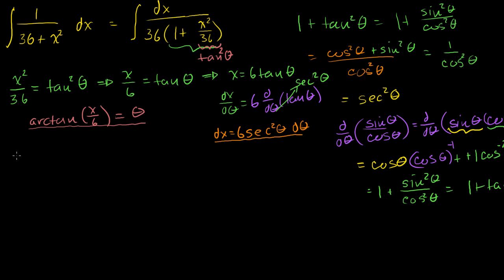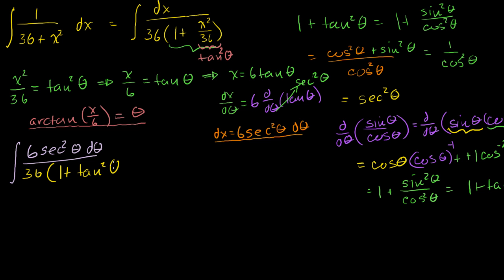So what does our integral reduce to? The integral becomes the integral of dx — which is 6 secant squared theta dθ — all over 36 times 1 plus tangent squared of theta. We know that 1 plus tangent squared of theta is secant squared of theta, so we have secant squared in both numerator and denominator — they cancel out.